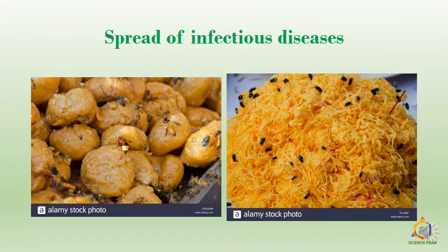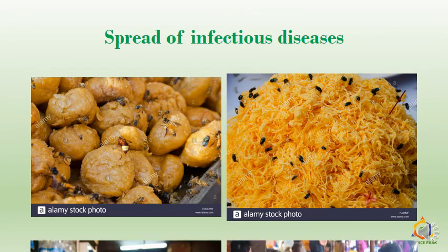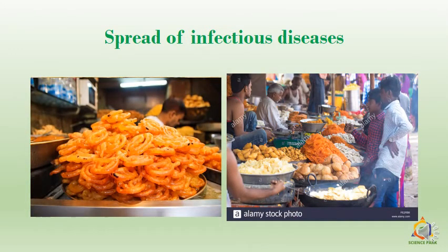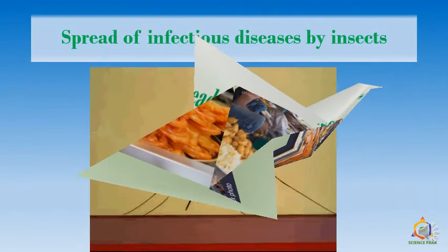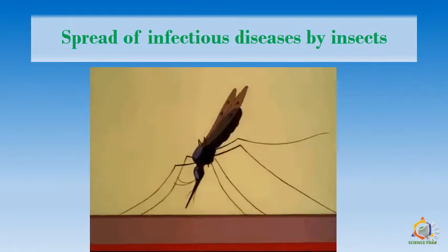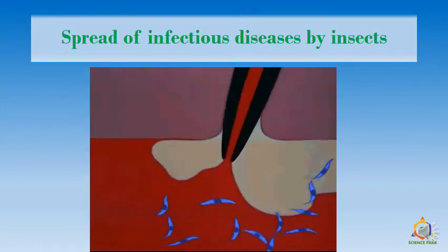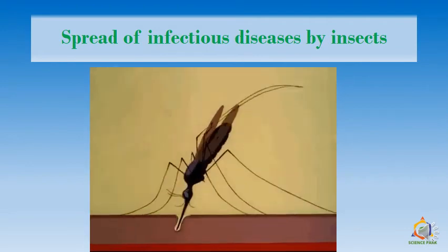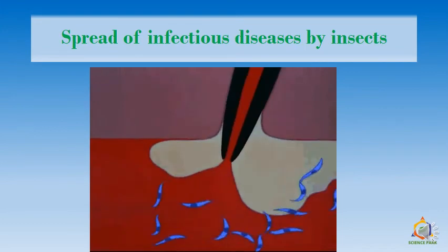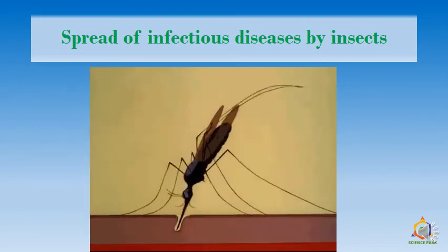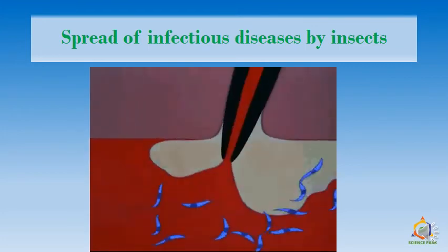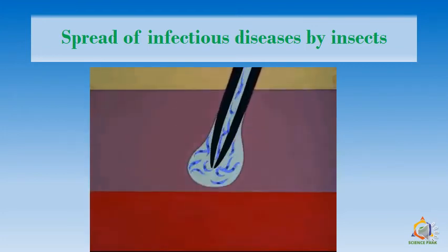Now observe these images carefully. What type of spread of infectious disease is this? Also observe this — how is the food kept? Which disease can spread through such food? Now, spread of disease by insect. You must have heard of malaria. A mosquito that has bitten an affected person having malaria — if the same mosquito bites another healthy person, the healthy person will also get malaria.